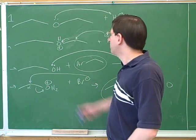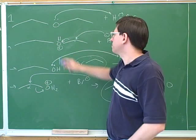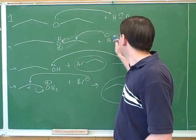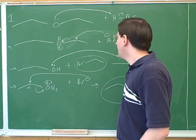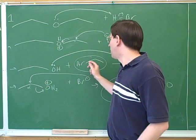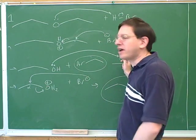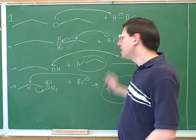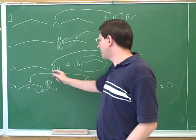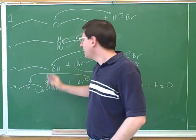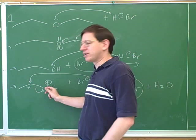Earlier we saw how if we started with the ether, we protonate the ether to make it into a better leaving group, and that reveals the bromide as a nucleophile — giving us an alcohol and the haloalkane. But then we basically went through that whole process all over again. If we still have excess hydrobromic acid, we can protonate the oxygen again, and that again makes it into a better leaving group.